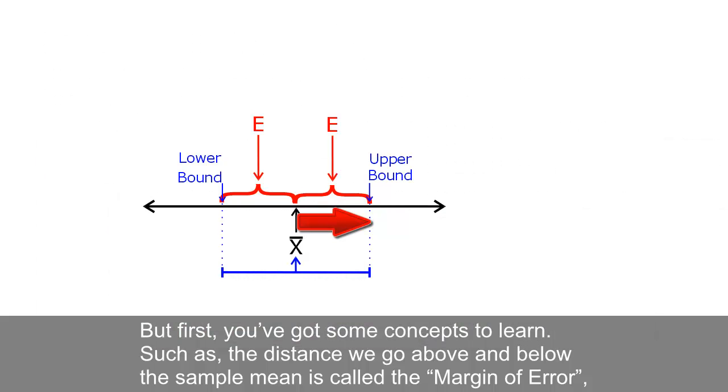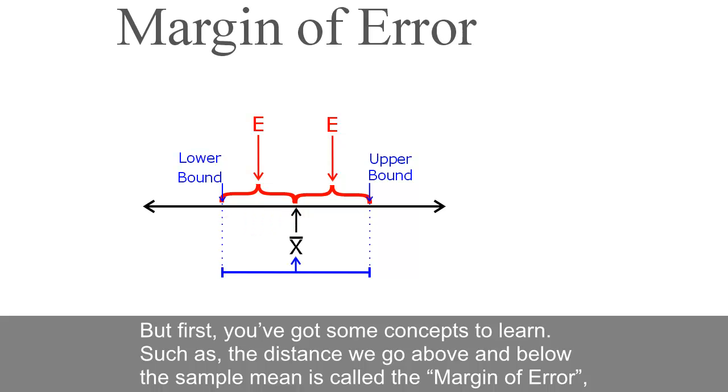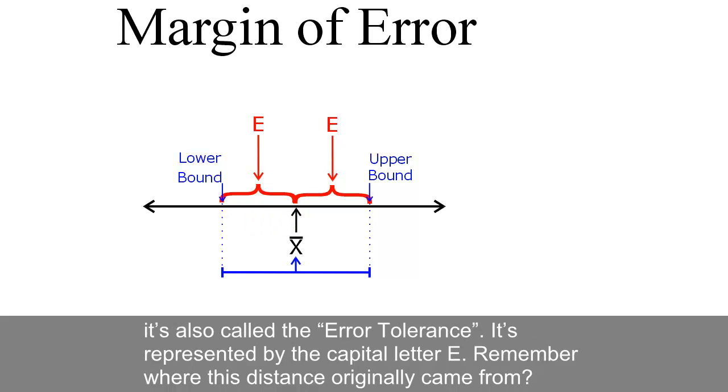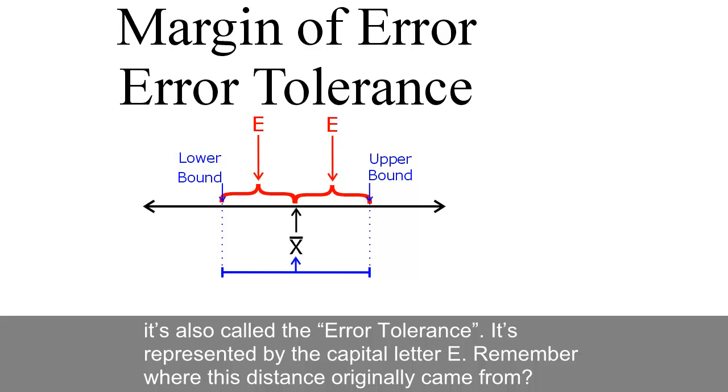Such as the distance we go above and below the sample mean is called the margin of error. It's also called the error tolerance. It's represented by the capital letter E.